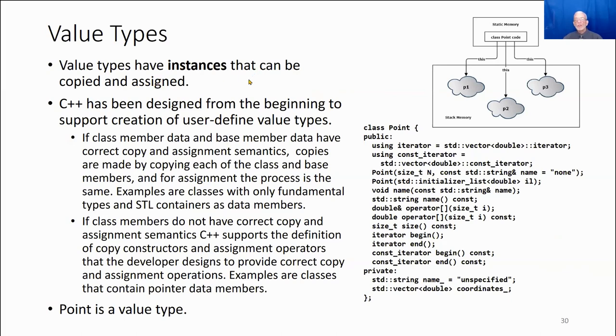So value types have instances that can be copied and assigned, and the thing that makes this unique for C++ is that they can also be polymorphic types. They can have virtual functions. They can have constructors and destructors. In many languages, a value type can't have constructors and destructors or virtual types. In C Sharp and Java, for example, it's that way. The D language has value types that can be implemented with user classes, but they can't be polymorphic. They can't have virtual functions.